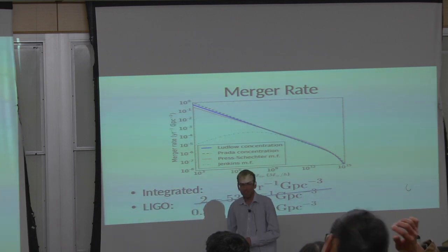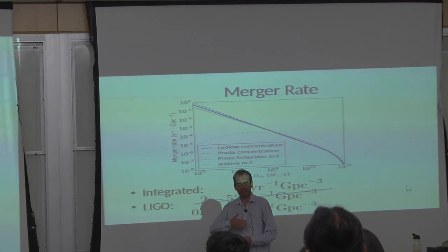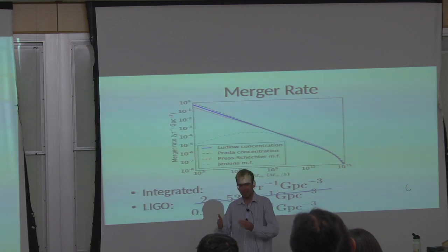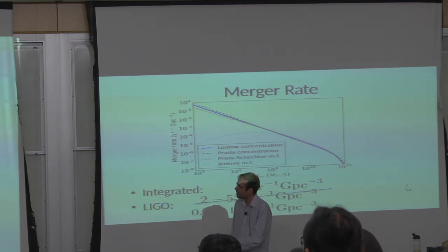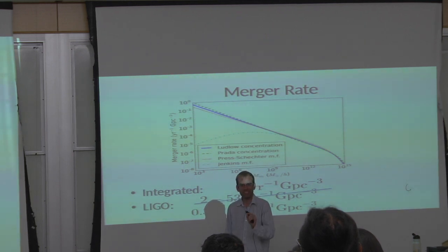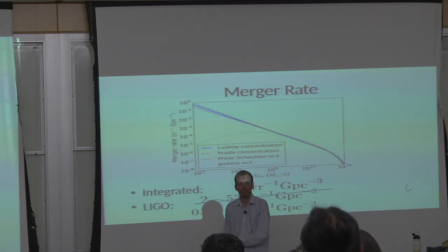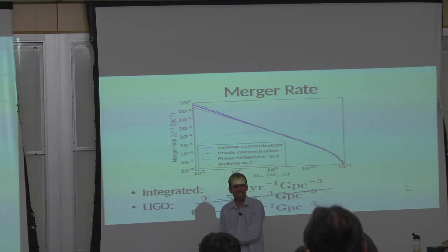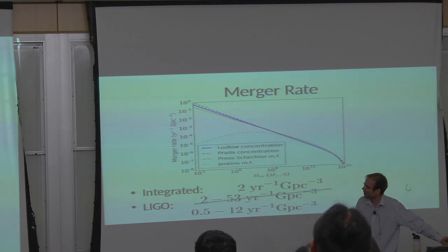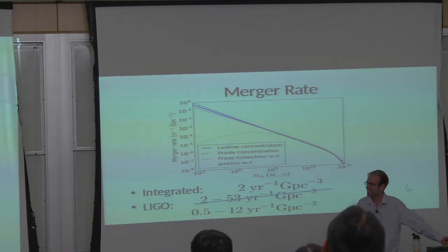Then what happened? LIGO kept switching on, taking data, observing things, and published another result with more detections and a much improved background estimation. The merger rate shifted down to 0.5 to 12 per year per cubic gigaparsec. For a theorist, I made a prediction and then the data moved around to match my prediction better — this is the best thing that can ever happen to you. Obviously this means it's right and they've detected primordial black holes, and I should get a Nobel Prize.